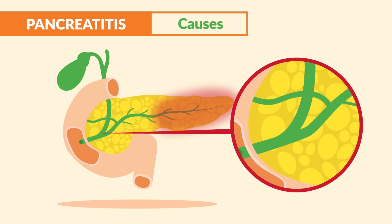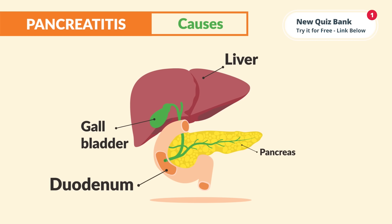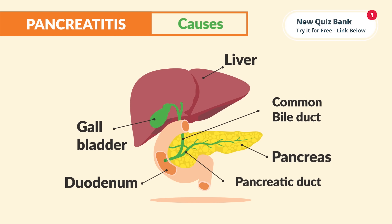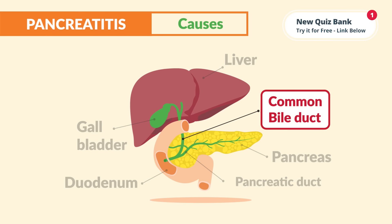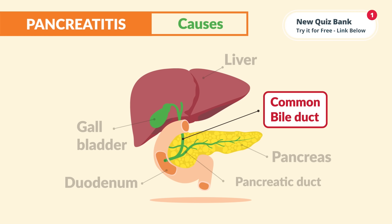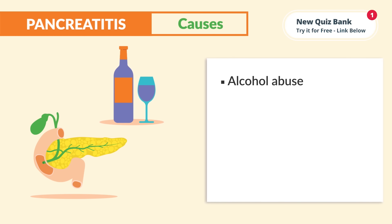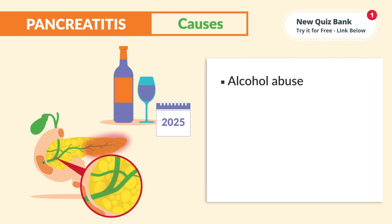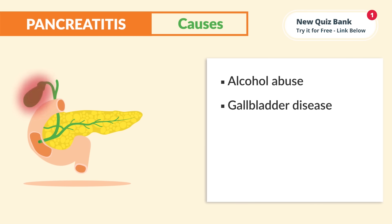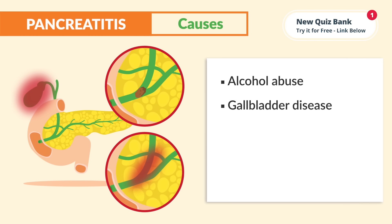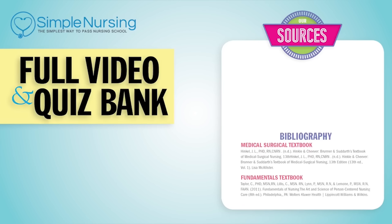The causes are simple — think anything that can block the pancreatic duct. We have many organs closely fitted together, like an apartment complex, all sharing the common bile duct which branches off into the pancreatic duct. Common causes include alcohol abuse, from years of inflammation that ends up occluding the duct, and gallbladder disease, where a gallstone or inflammation blocks the duct.